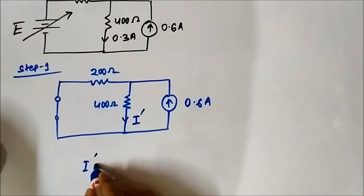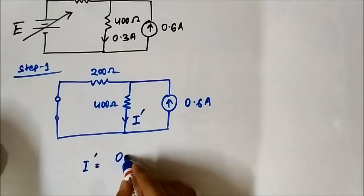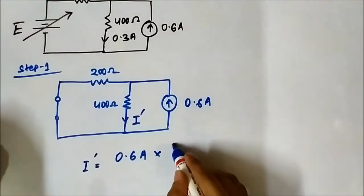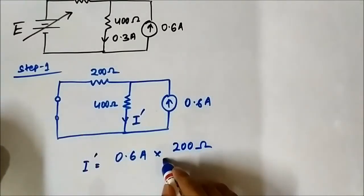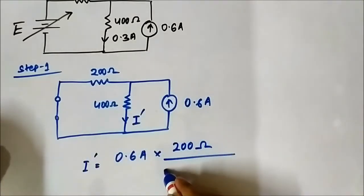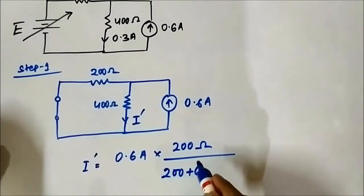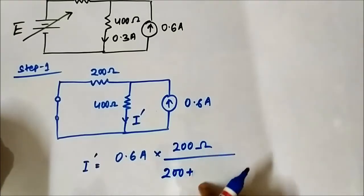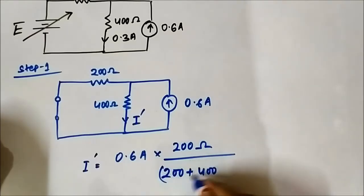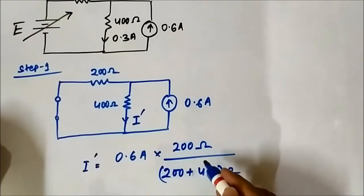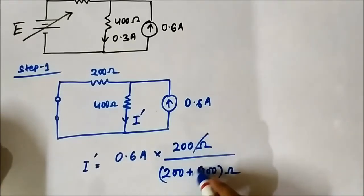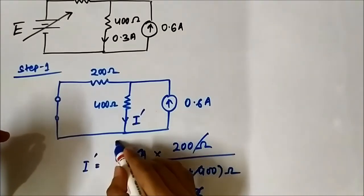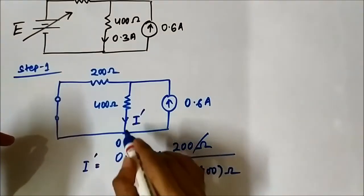Using current division, I dash equals 0.6 ampere multiplied by the other resistor, which is 200 ohm, divided by the sum of the two resistances: 200 plus 400 ohm, which equals 600 ohm. So 200 divided by 600 gives one-third, and 0.6 times one-third equals 0.2 ampere. The current I dash is 0.2 ampere, and it flows downward.